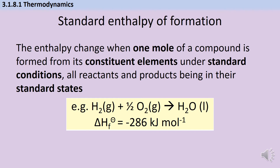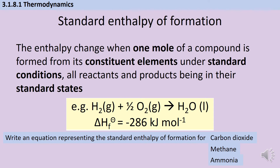As a personal preference, since these are ΔH changes, I've always preferred to put the little letter afterwards. Based on this, can you write a chemical equation representing the standard enthalpy of formation for carbon dioxide, methane, and ammonia? Pause the video and then check your work.